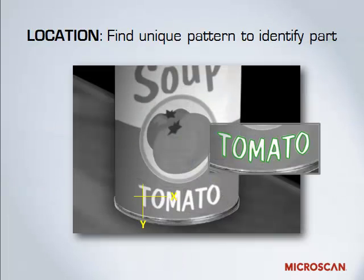Additionally, you can find a unique pattern and use that to identify a part. An example here is a can of soup — the vision system has been trained to look for a pattern on the soup, in this case the portion of the label that says 'tomato' on it. We can use that pattern to verify that we do, in fact, have the right soup going down the line.